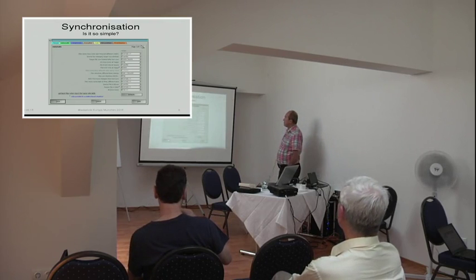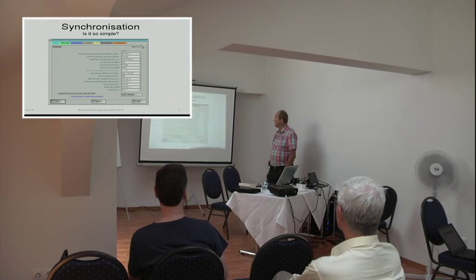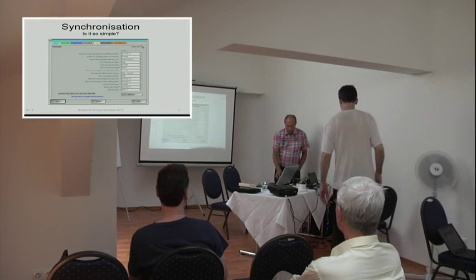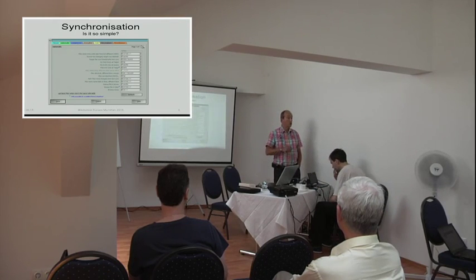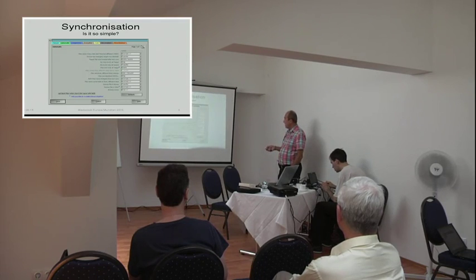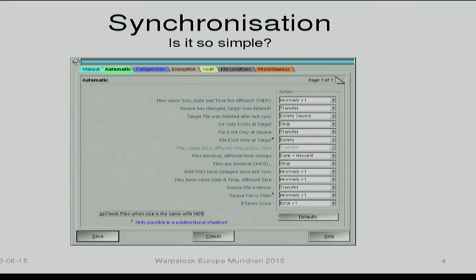Unfortunately you can't see this very well, but this is the synchronization settings page within EasySync. Basically, what you have is the ability for all situations to say what you want to do. For example, you say if the file name, size, date and time are the same but the MD5 is different, what do you want to do? In this case we would say this is an anomaly — there's something strange. It's not something you can automatically decide on, so you want to flag it as an anomaly and later look at it yourself.